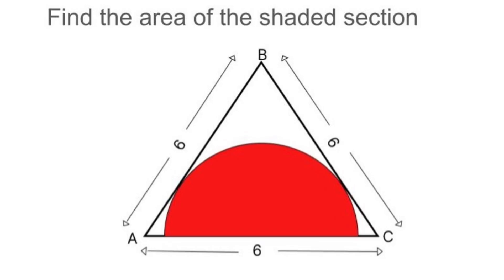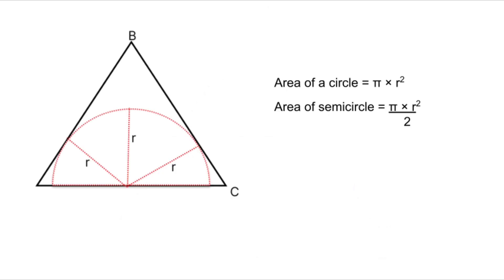Now remember, the formula for the area of a semicircle is pi times r squared, all divided by two. So what's our first step? Well, we've got to find the radius. That's the key. Once we've got that, it's just a matter of plugging it into the formula and solving from there.